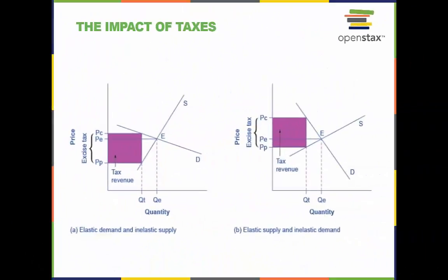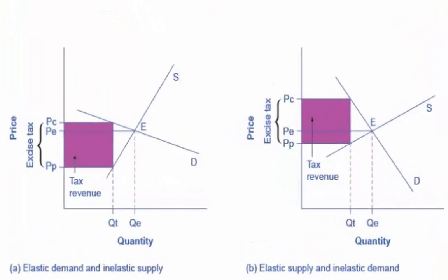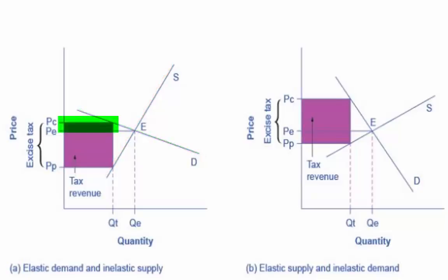Let's take a look at how elasticity determines if certain taxes, like an excise tax, will generate more or less tax revenues for the government. An excise tax introduces a wedge between the price paid by consumers, PC, and the price received by producers, PP. When the demand is more elastic than supply, the tax incidence on consumers, PC minus PE, is lower than the tax incidence on producers, PE minus PP.